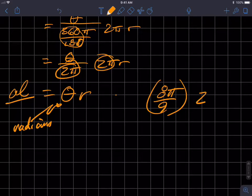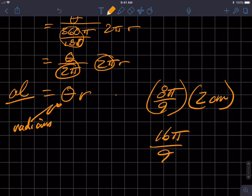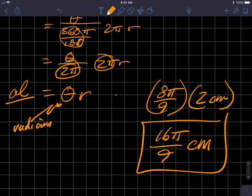I just take 8π over nine radians, multiply it times the radius of the circle, two centimeters, and I get 16π over nine centimeters as my arc length.